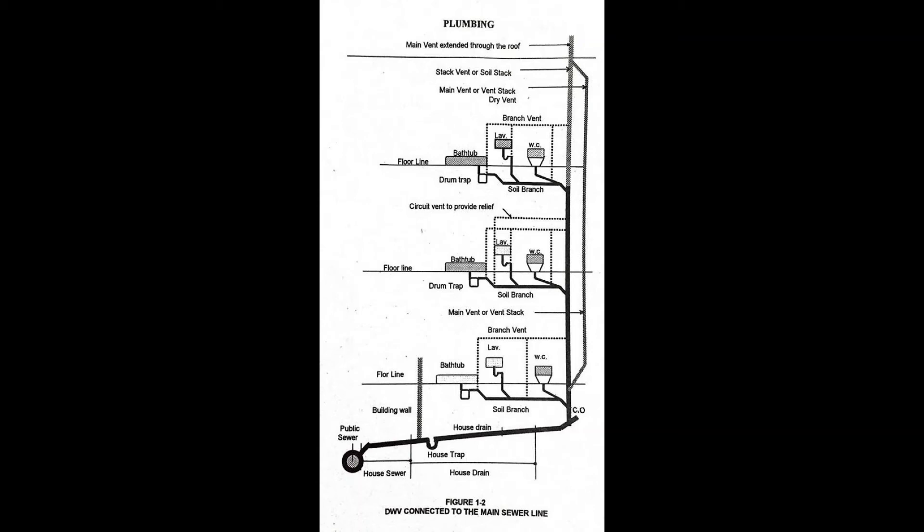Rough in is the installation of all parts of the plumbing system which can be completed prior to the installation of fixtures. This includes drainage, water supply, vent piping, and the necessary fixture supports. Return bend is an open return bend usually with an inside thread.